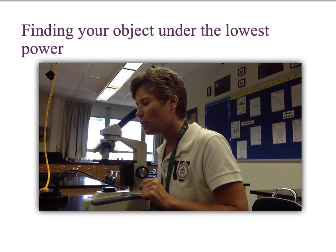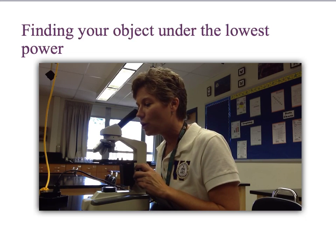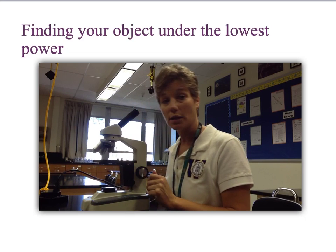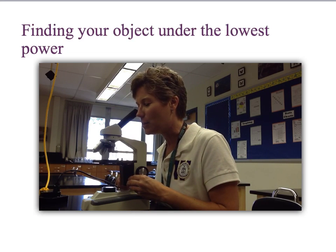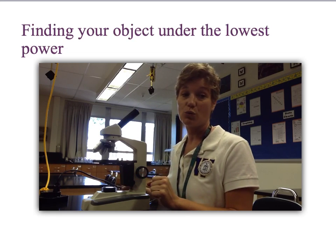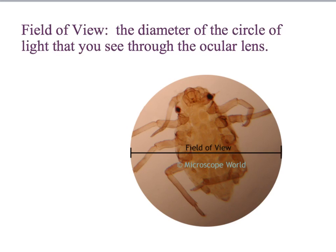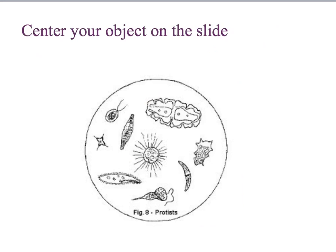Looking through the ocular lens, turn the coarse focus knob away from you until you can see your object, then use the fine focus knob to make the resolution nice and crisp. When you look through the microscope, you will see a circle of light called the field of view. Hopefully your object will appear in that field of view, and you want it to be in the center — if it's centered, you will always see it even when you change magnification.